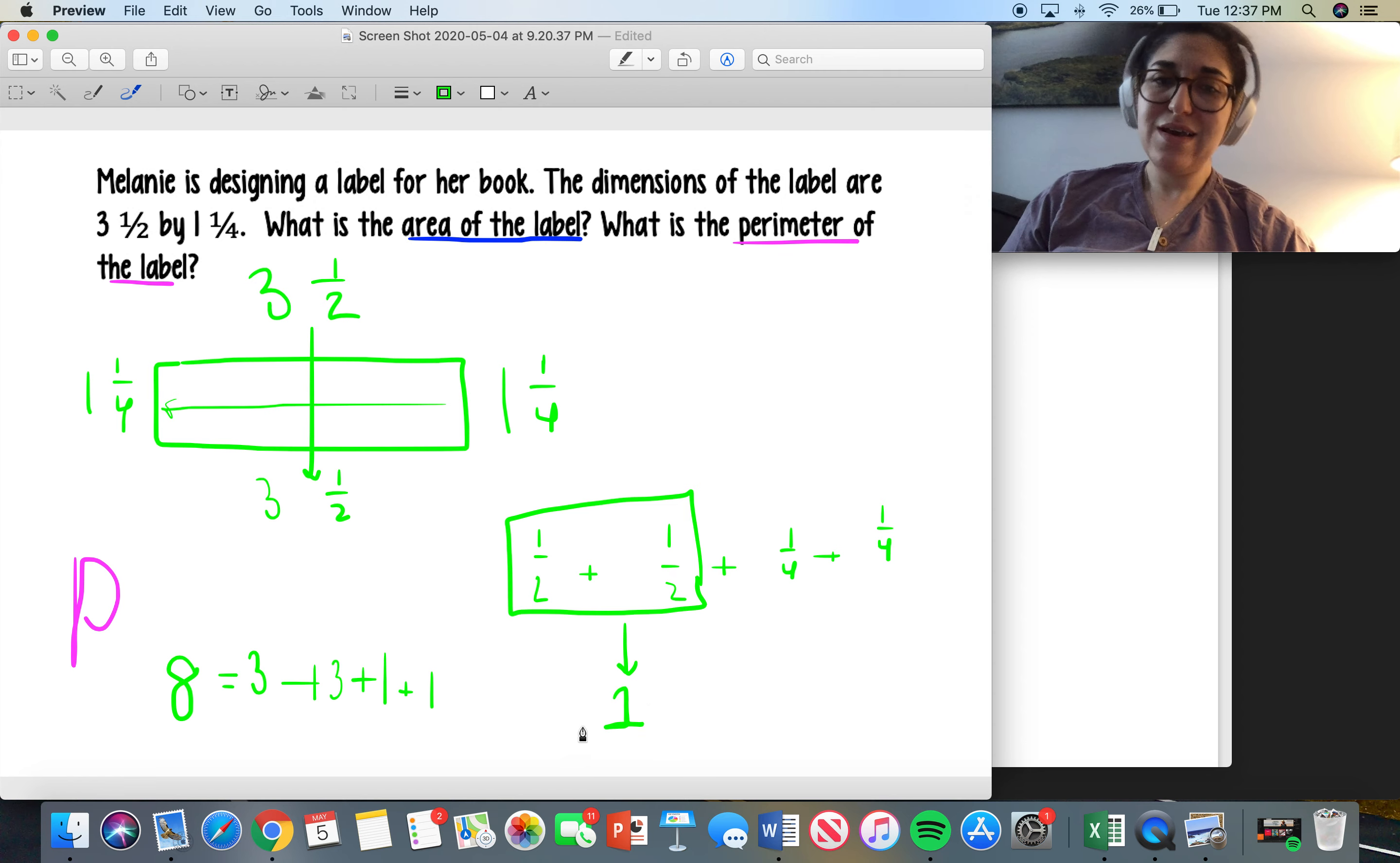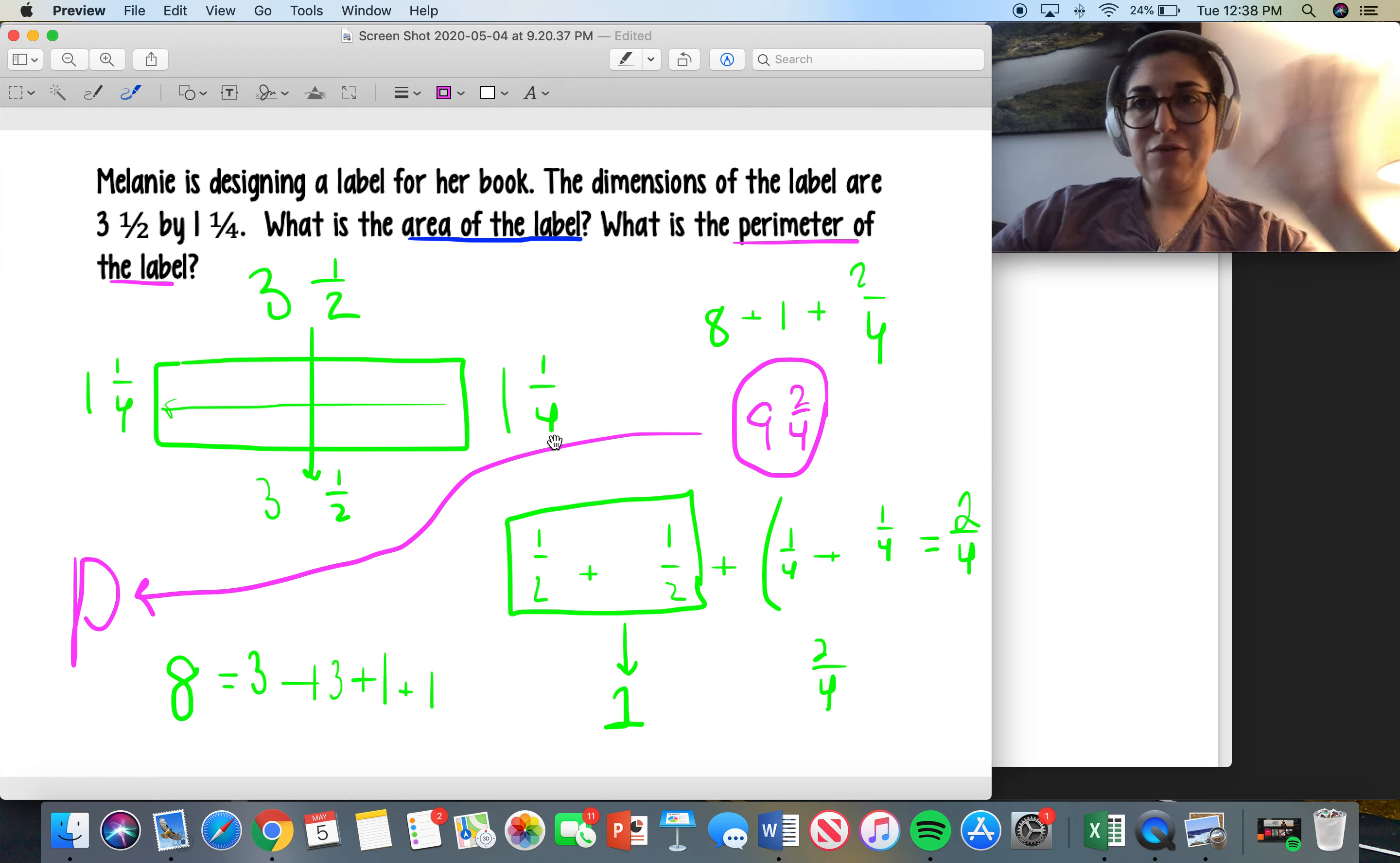So my perimeter is going to be nine, that's not a very legible nine, nine and two-fourths. So the way I found the perimeter again is I added all of the sides together. Alright? Sounds good. Hope you enjoyed that. Hope it made sense. I'll see you later, scholars. Bye.